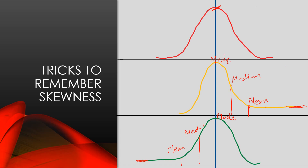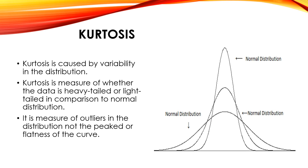Moving towards kurtosis — kurtosis is caused by variability in a distribution. Data can be closely packed or spread out. Kurtosis is a measure of whether data is heavy-tailed or light-tailed in comparison to a normal distribution. It is a measure of outliers in the distribution — not peakness or flatness as written in many books. Kurtosis actually measures the heavy or light tail in comparison to normal distribution, as seen in graphs where three distributions look different despite all being normal.